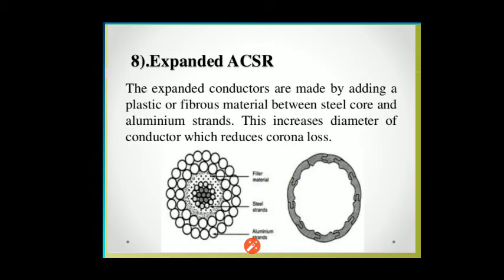Eighth, the expanded ACSR conductor. As shown in the diagram, expanded ACSR conductors are made by adding a plastic or fabric material between the steel core and the aluminium strands. This increases the diameter of the conductor, which reduces corona loss. It is one of the most effective designs used in ACSR conductors.